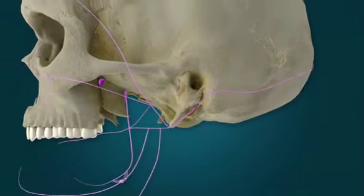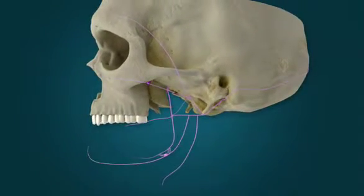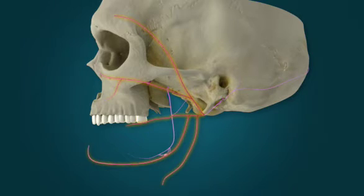The remaining motor branches form a plexus called the parotid plexus that enters the parotid salivary gland and divides into five branches distributed to the muscles of facial expression.